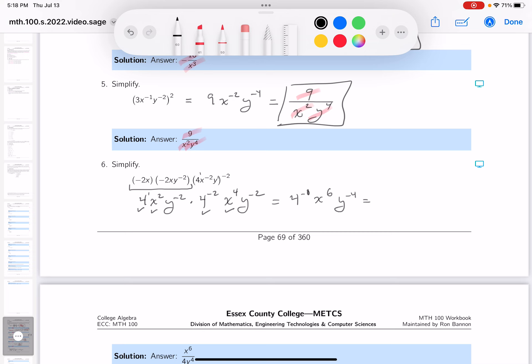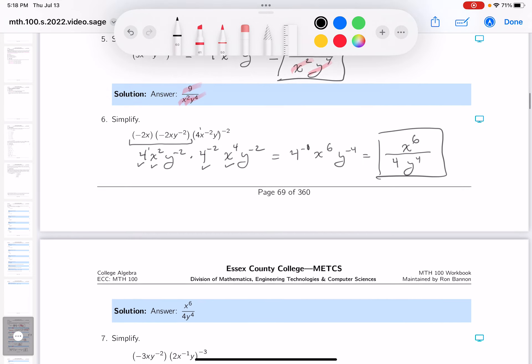Convention is we don't like negative exponents. So I'll write this as x to the 6. 4 to the minus 1 is 4 on the bottom to the first power. I'm not going to write the first power down. And then y to the 4. These are problematic. Errors do occur.